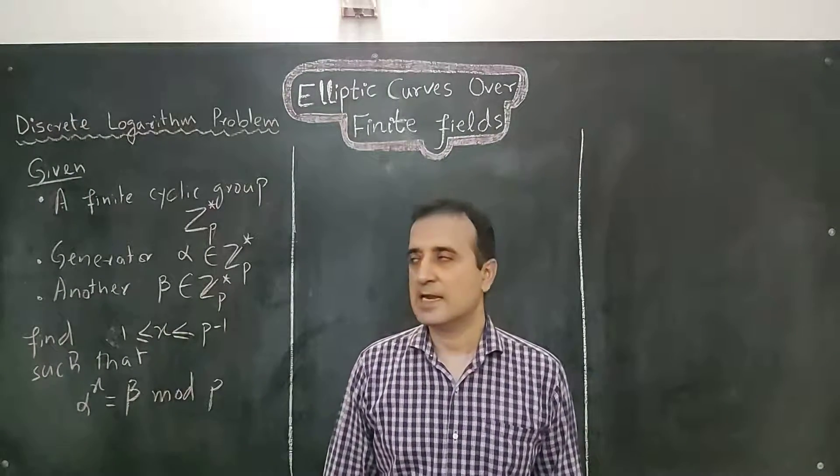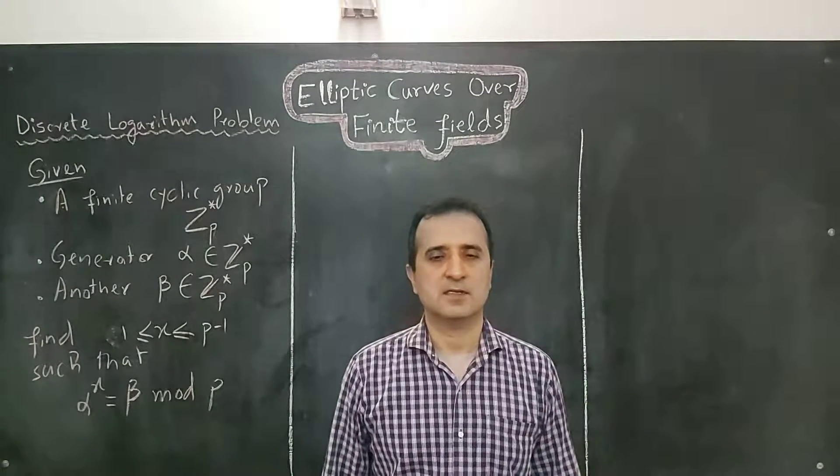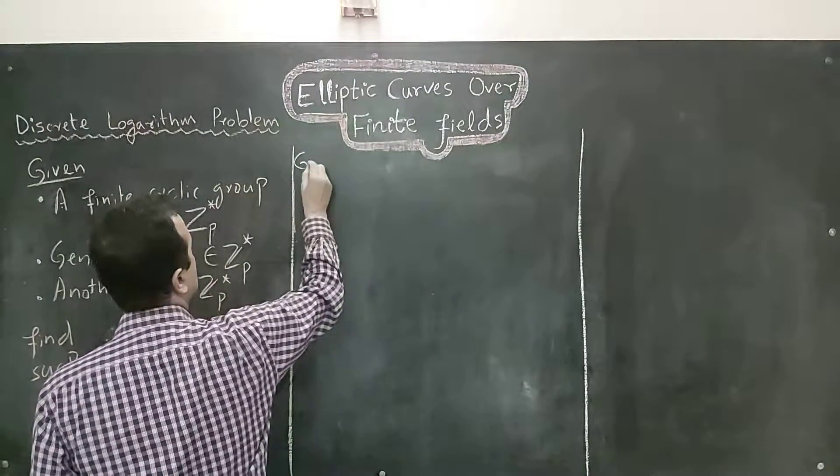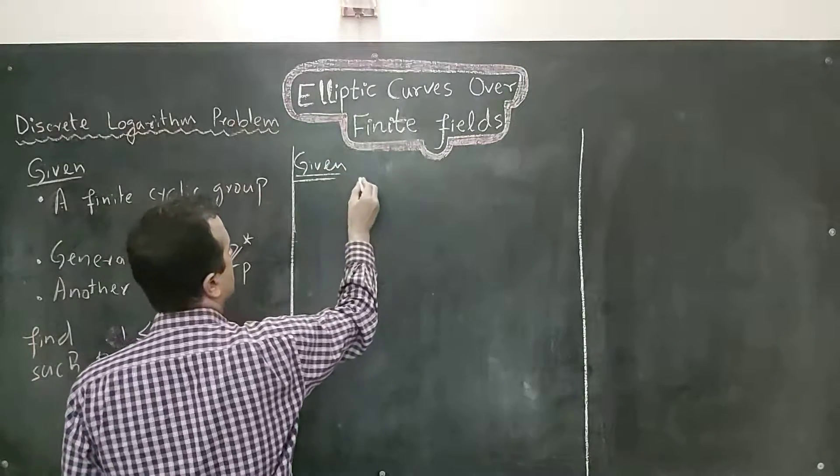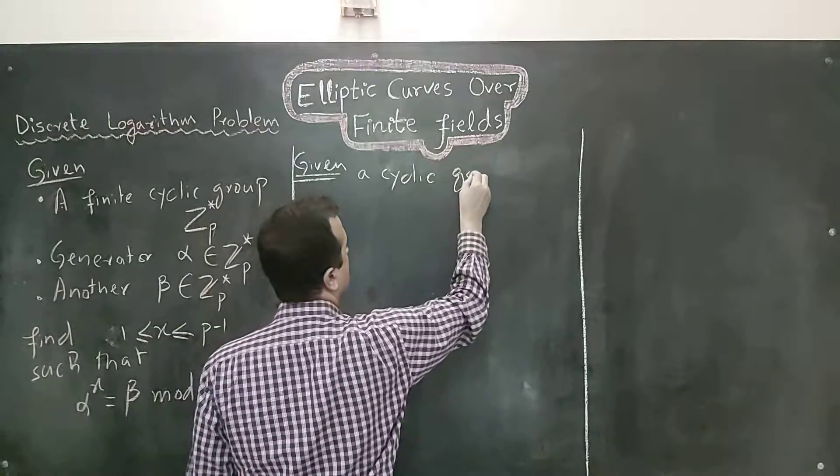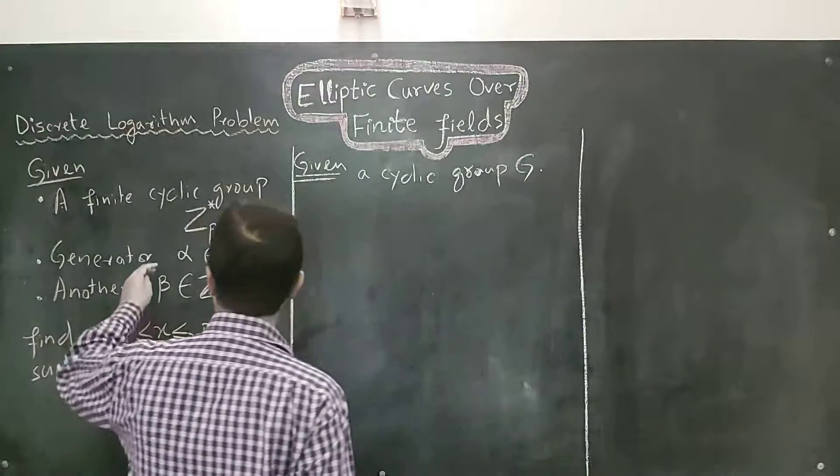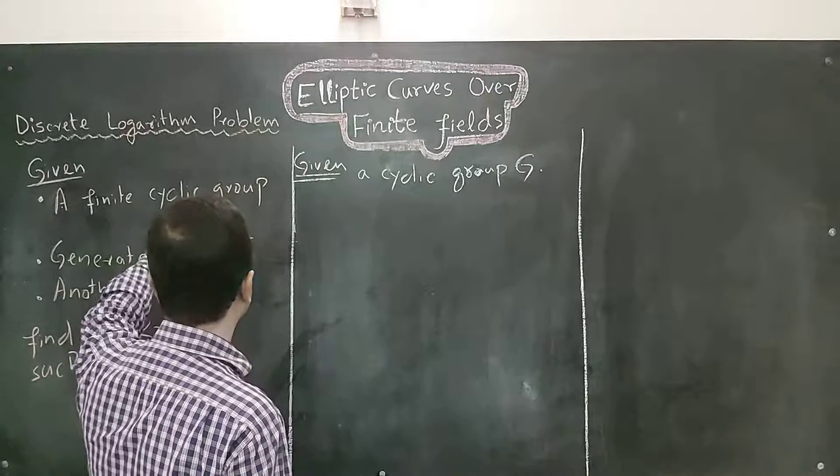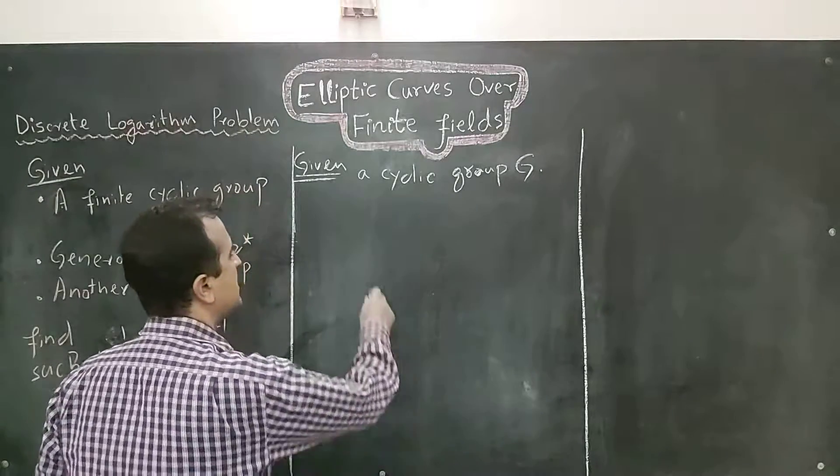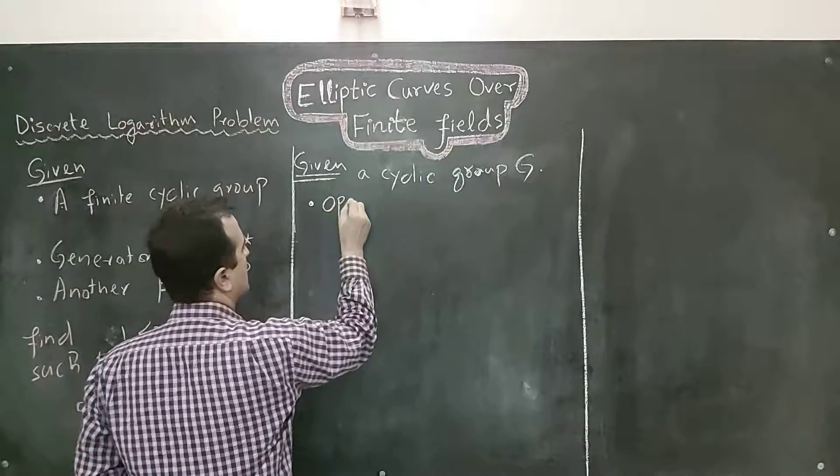Generalization of discrete logarithm problem is called generalized discrete logarithm problem. In generalized discrete logarithm problem, we are given a cyclic group G. In this case, the cyclic group was a specific group defined over multiplication and over prime numbers. But in this case, cyclic group can be any group and the operation of the group can be anything.